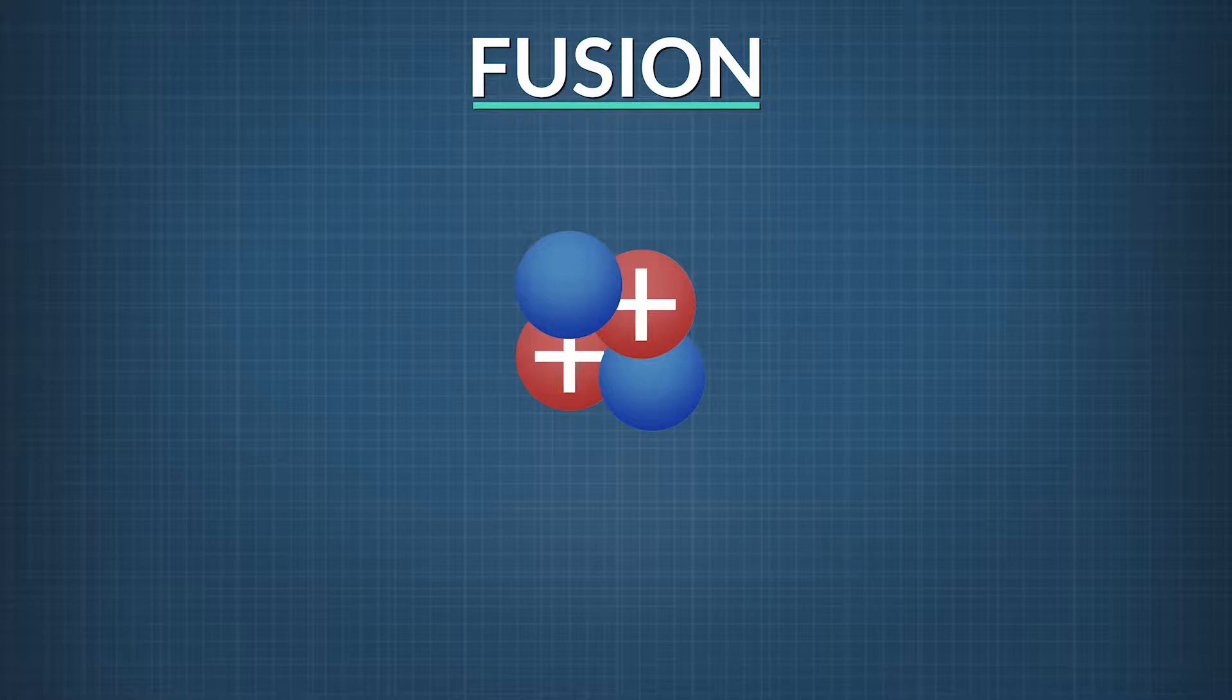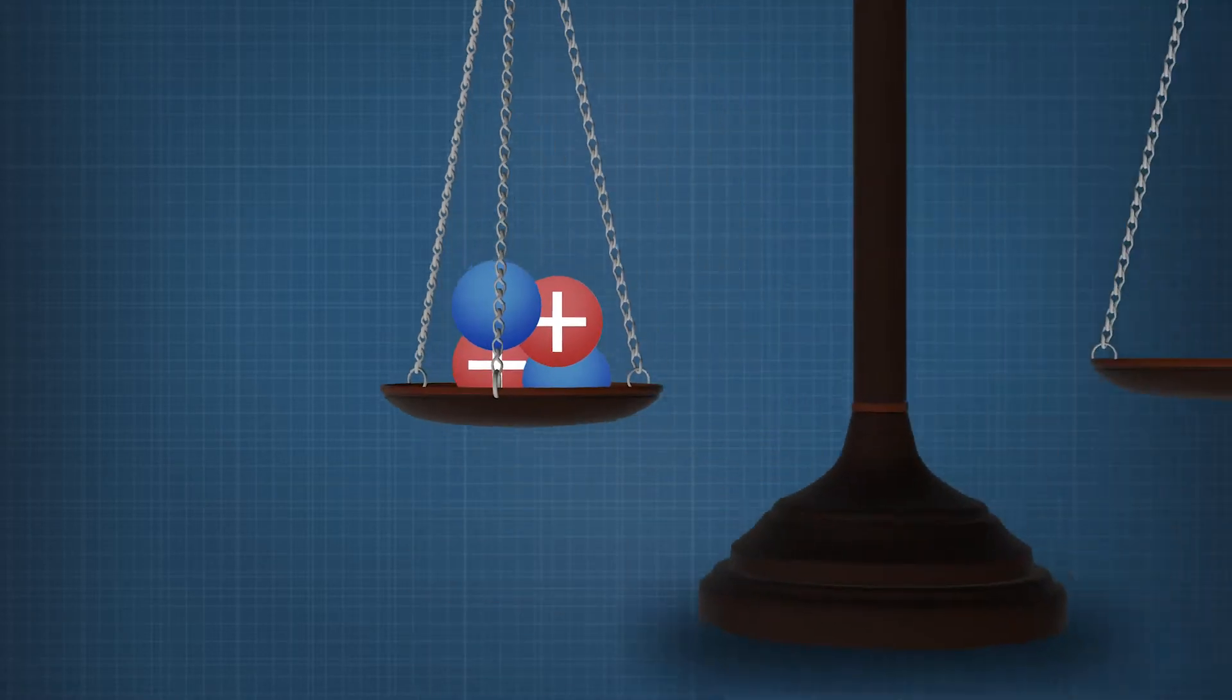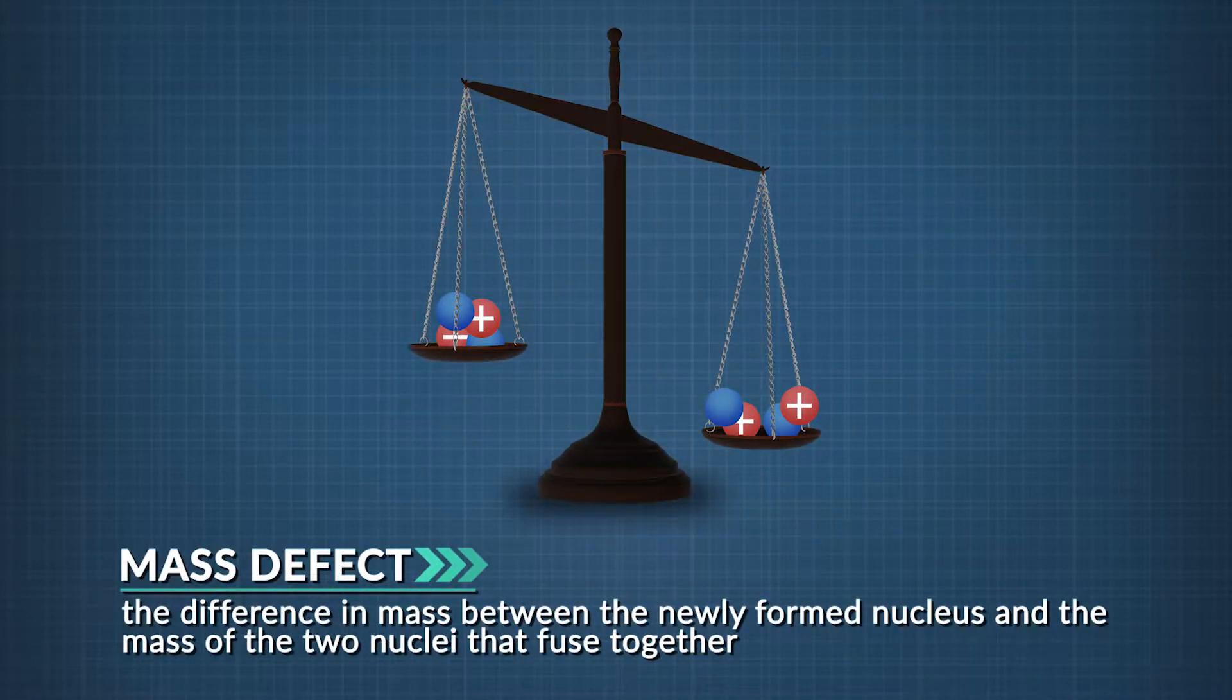But this time, instead of breaking a nucleus apart, the two atoms nuclei come together, causing a fusion reaction. The mass of the newly formed nucleus is less than the total mass of the two nuclei coming together. The difference in mass is called the mass defect. And just like with fission, that missing mass is released as energy.